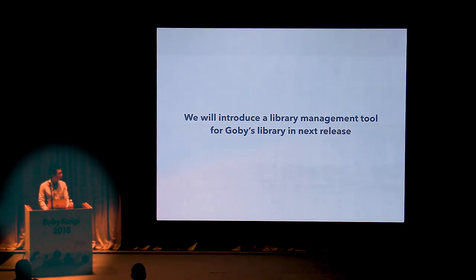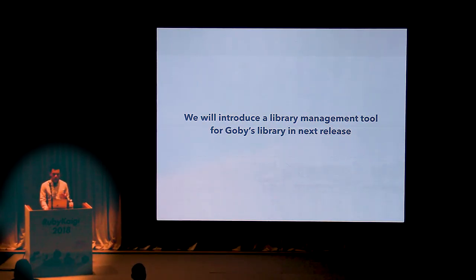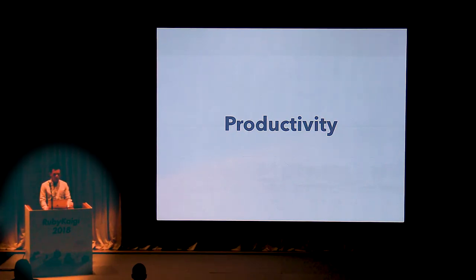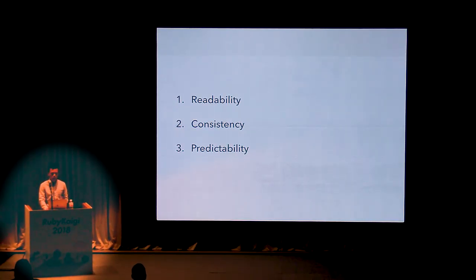We will try something new and drop some features, so we don't plan to support all Ruby features. Even if we wanted to, we'd face the well-known problem: it's easy to reproduce 80% of Ruby's features but hard to reproduce the remaining 20%. To let users build and share Gobi libraries, we'll introduce a library management tool in the summer, and integrate a dependency management tool in the future. For productivity, a productive language must excel at three things: readability, consistency, and predictability.